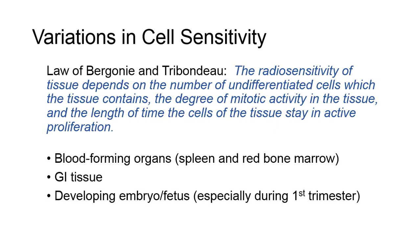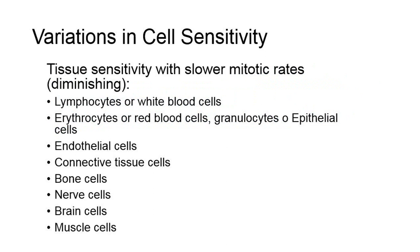Radiation-induced mitotic delay in the life cycle of a cell is usually reversible. But based on these factors, it follows that the most sensitive tissues include blood-forming organs such as the spleen and red bone marrow, gastrointestinal tissue, and the developing embryo or fetus, especially during the first trimester. These will be more radiosensitive than tissues whose cells have a slower renewal rate. Various kinds of cells may be grouped as follows in order of diminishing sensitivity: lymphocytes or white blood cells, erythrocytes or red blood cells, granulocytes or epithelial cells, endothelial cells, connective tissue cells, bone cells, nerve cells, brain cells, and finally muscle cells.